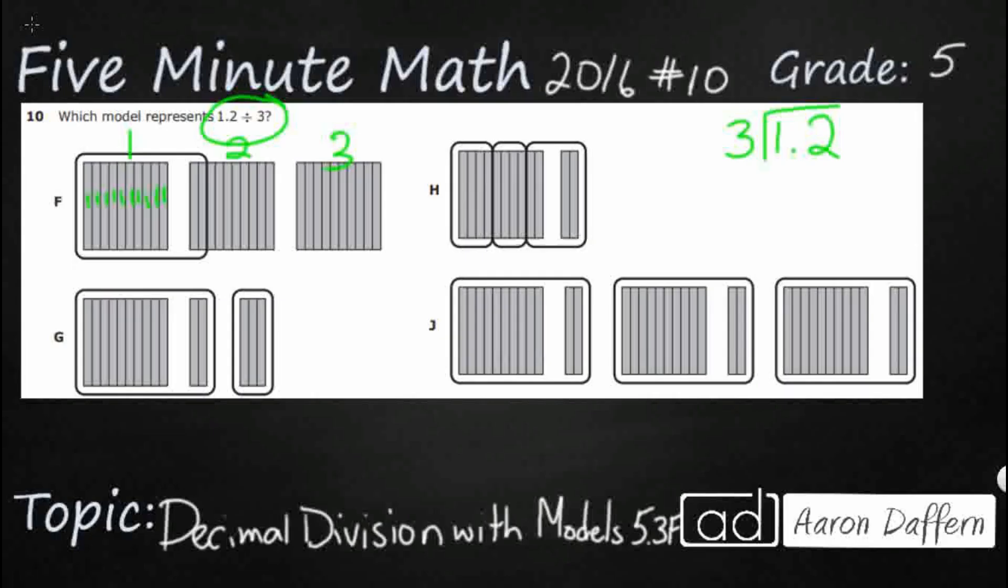So this one looks like it's got three wholes divided by—and it almost looks like it's trying to do 1.2. Take a look at this: it's got one right here, and then it's got the 0.2. But the problem is it doesn't have equal groups of 1.2, right?